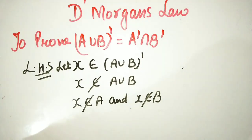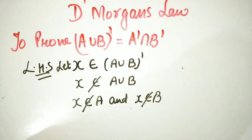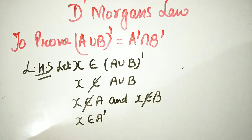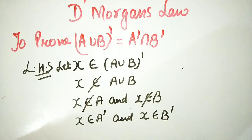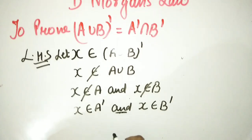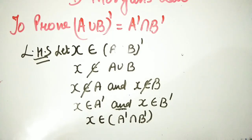Now, when x belongs to A union B, it means x belongs to A and x belongs to B. So here, x belongs to A complement and x belongs to B complement. Combining these, x belongs to A complement intersection B complement.